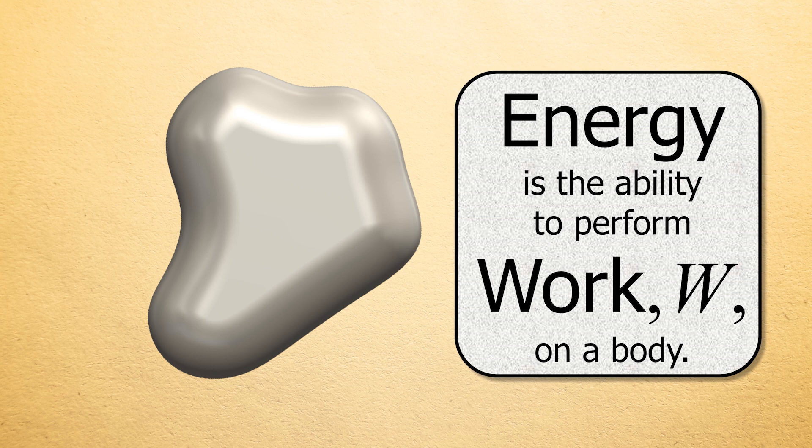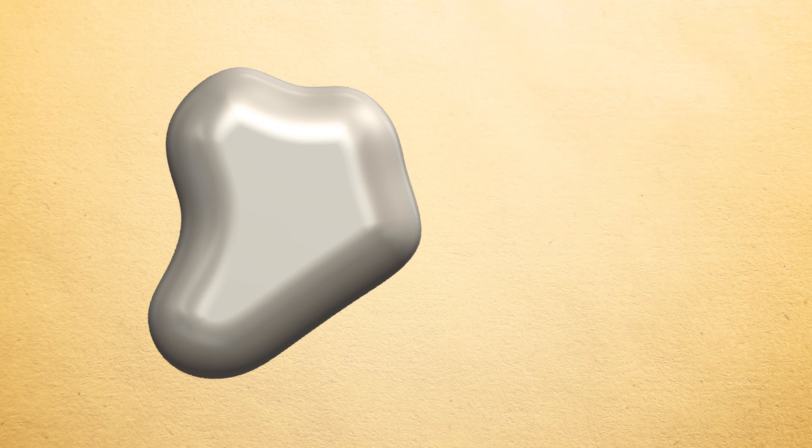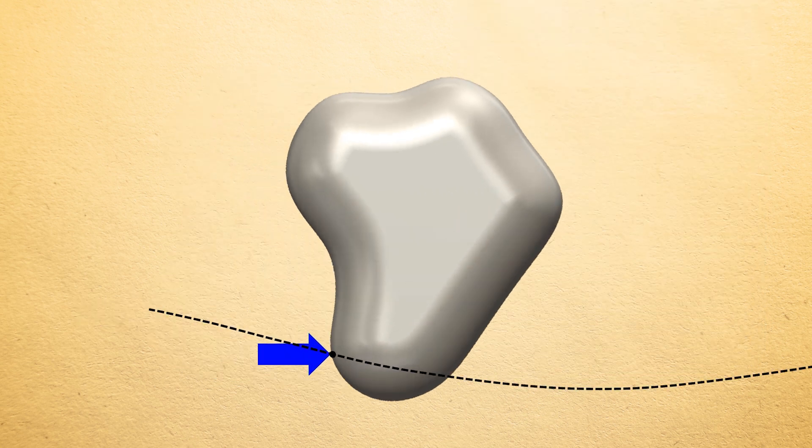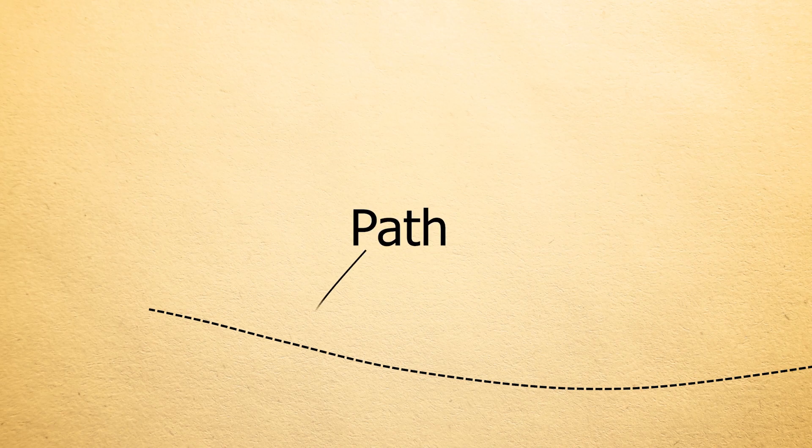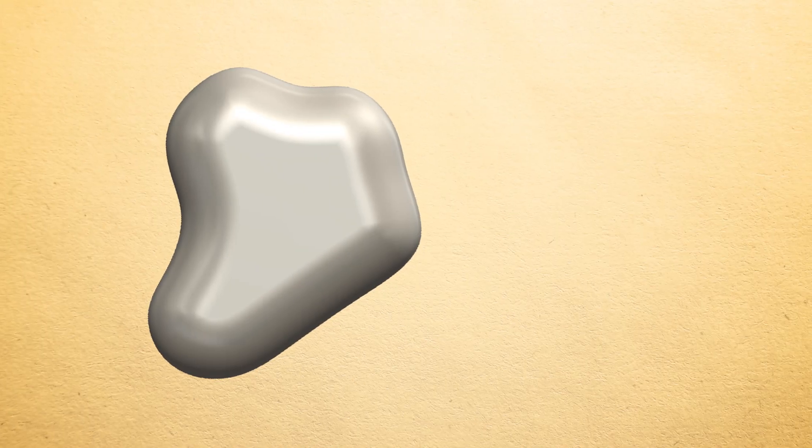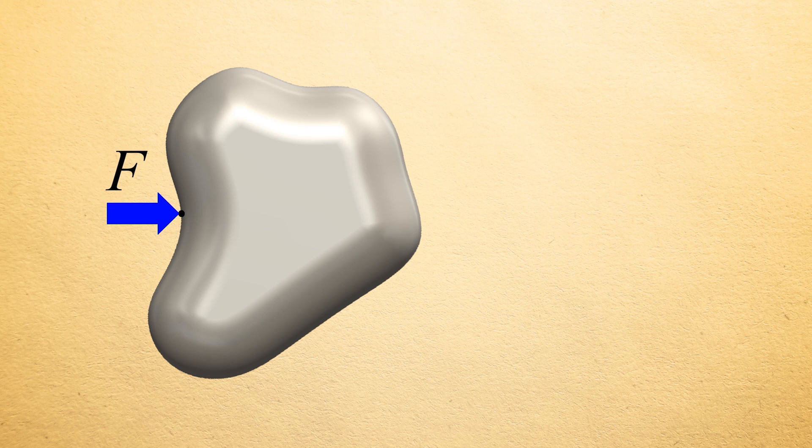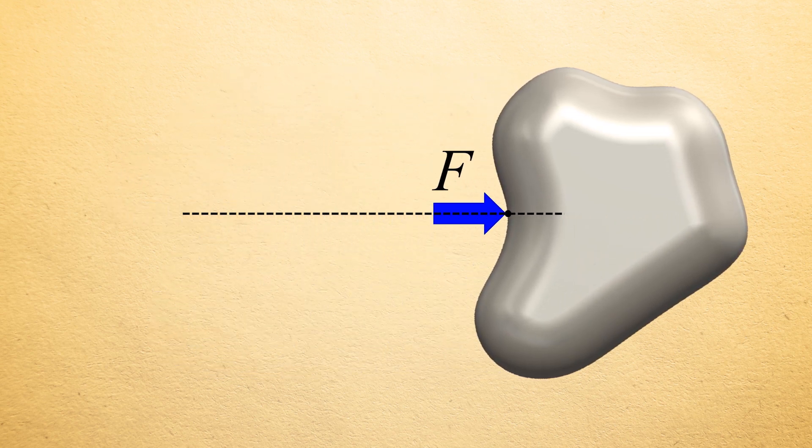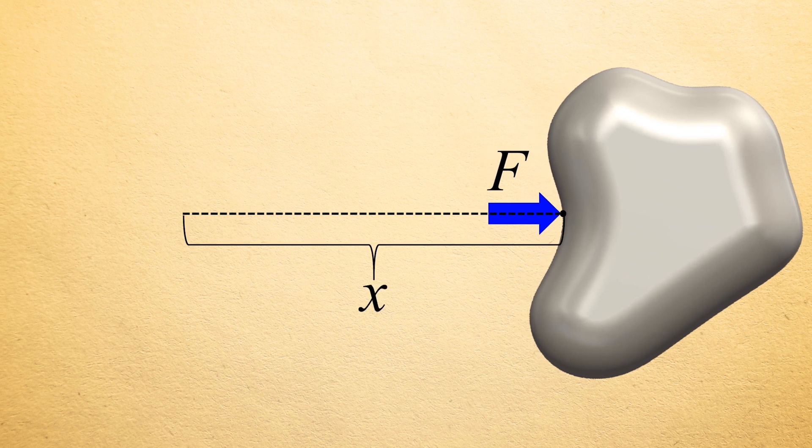And according to physics, work is performed on a body when an applied load acts on the body as it displaces along a path. If, for example, a constant force F is applied to a body and the body displaces along a straight path in the direction that the force is being applied by a distance x,